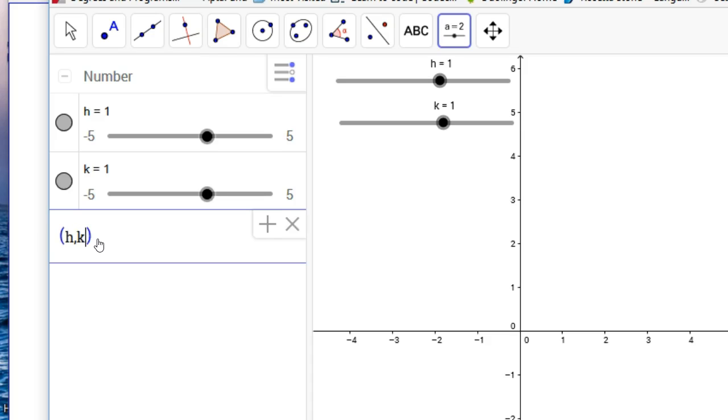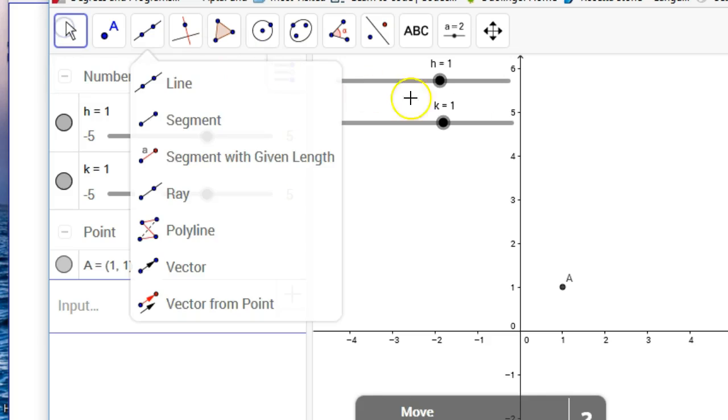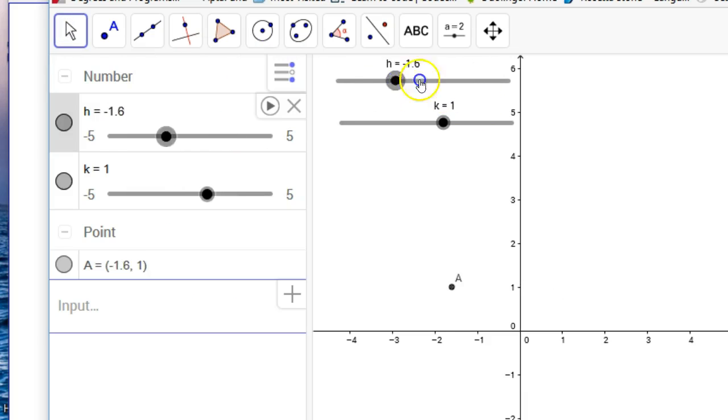h, comma, k in the input. Hit enter. And there it is. And you can now watch me slide it around. There's left and right, k, up and down. So there you have it.